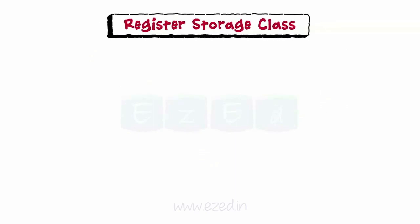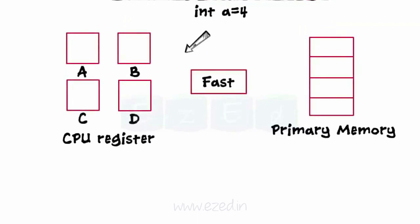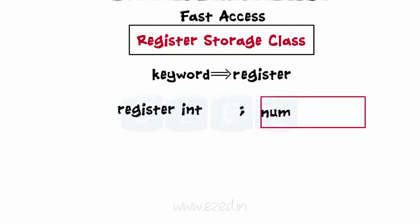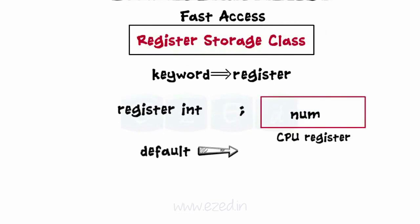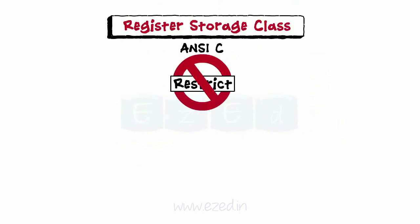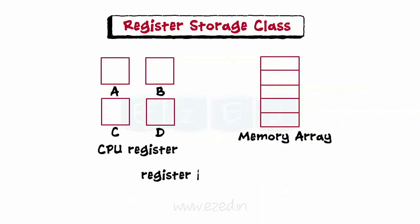Lastly, we learn the register storage class. Variables stored in the registers of the CPU are accessed in much less time than those stored in primary memory. To allow the fastest access to a variable, register storage class is used. The keyword used is register. The variable declared as register type gets stored in a CPU register. The default value is garbage. Though the ANSI C standard does not restrict its application to any particular data type, most compilers allow only int and char variables to be placed in the register. C automatically converts register variables to non-register variables once all the registers are utilized.